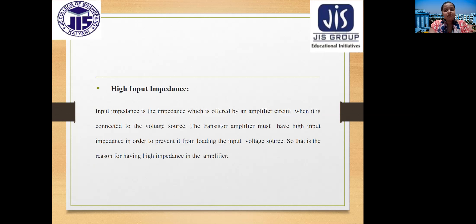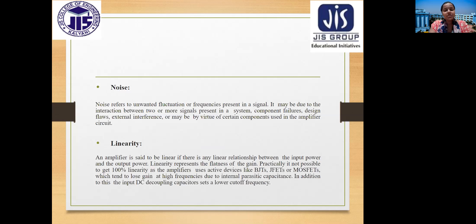Input impedance is the impedance offered by an amplifier circuit when connected to a voltage source. A transistor amplifier must have high input impedance to prevent loading of the input voltage source. Noise refers to unwanted fluctuations or frequencies in a signal, which may arise from interaction between signals, component failure, design flaws, external interference, or inherent component properties. An amplifier is said to be linear if there is a linear relationship between input power and output power.